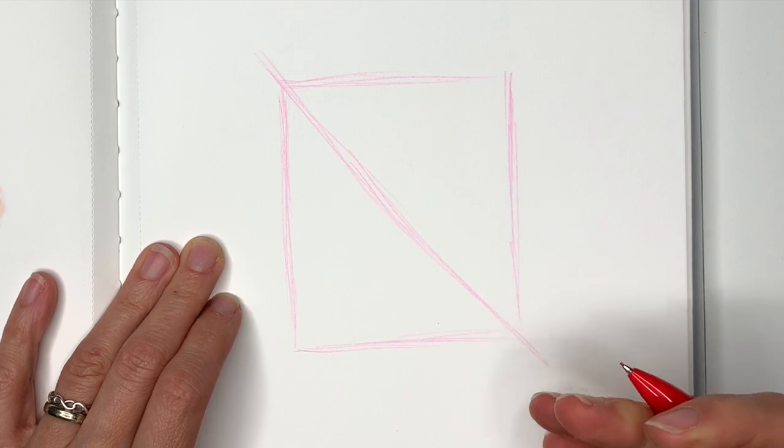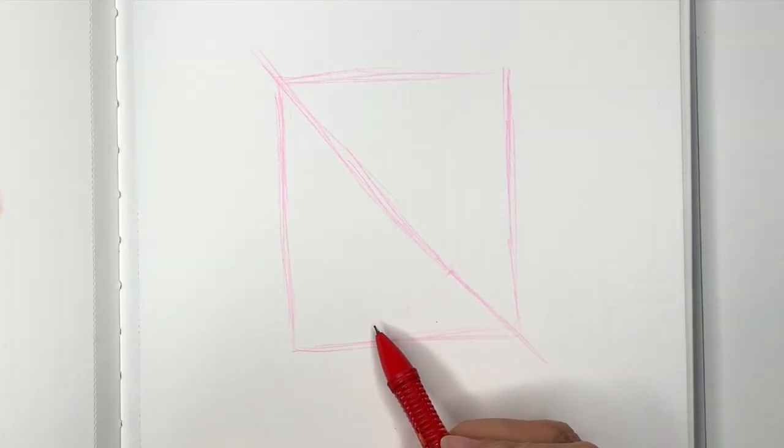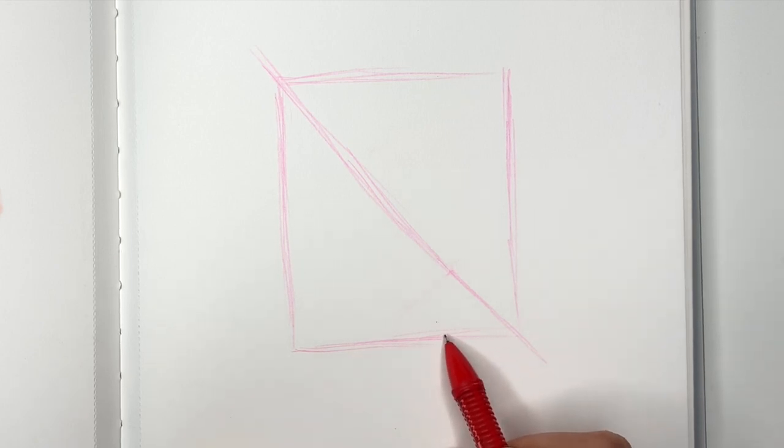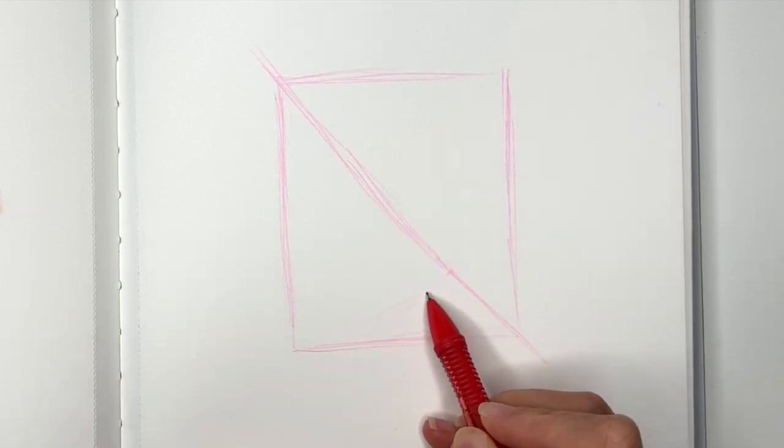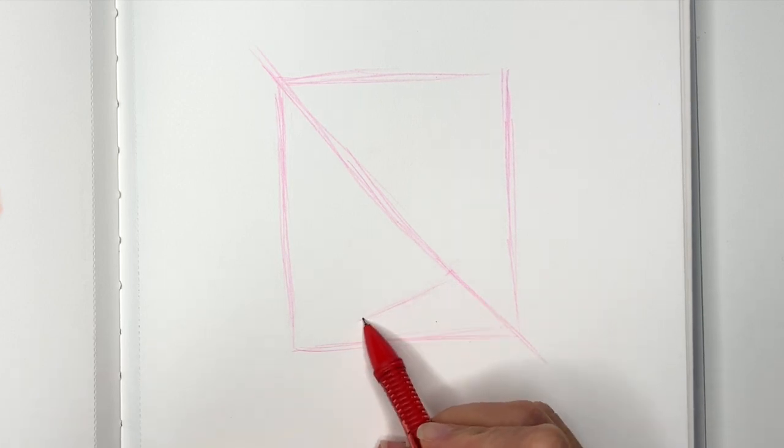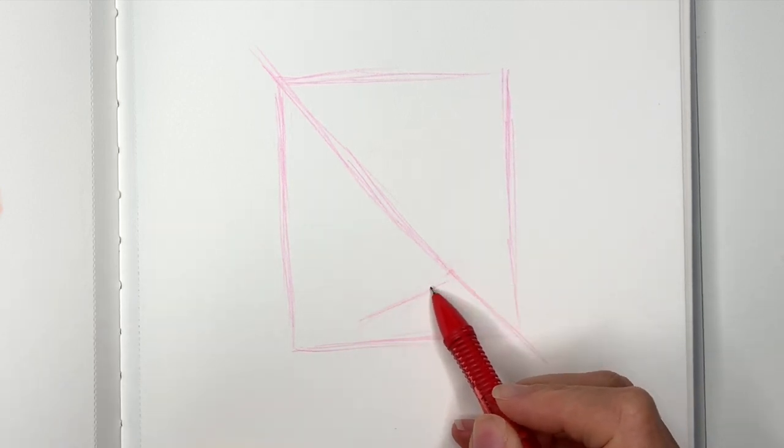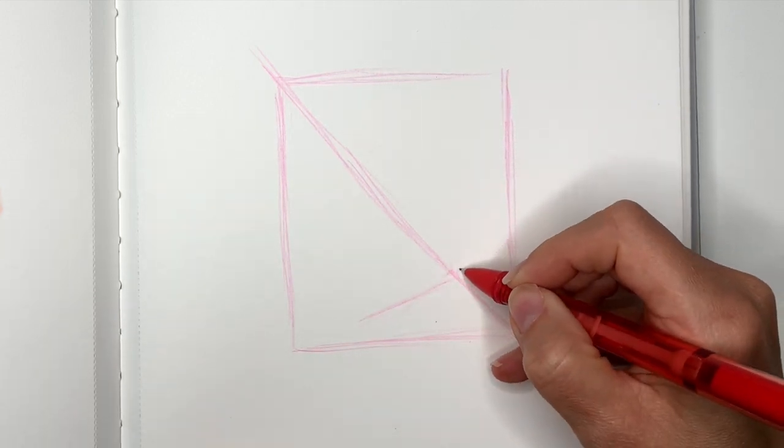We're going to begin by drawing a line from about halfway here to our diagonal line. This will be the body of our butterfly and that will end with a head that will go here.